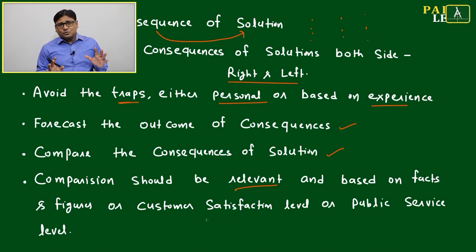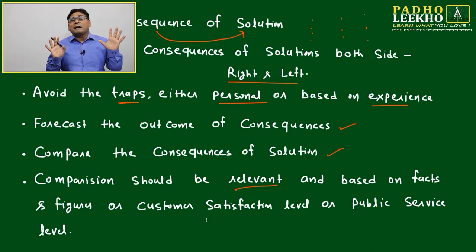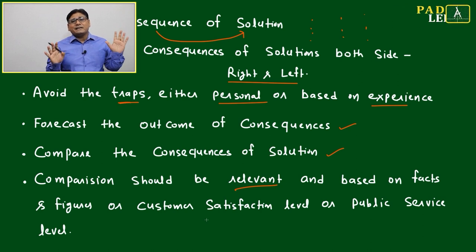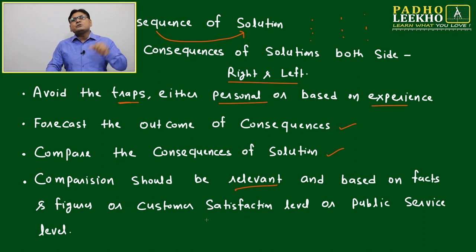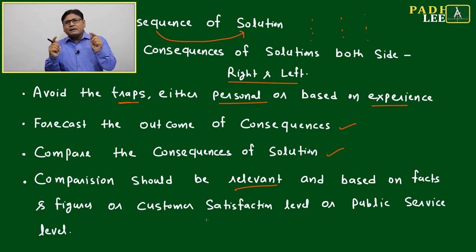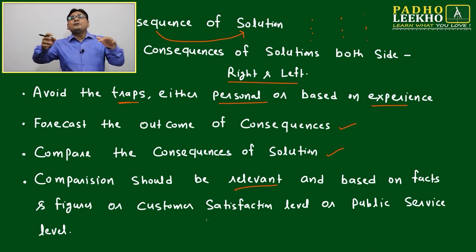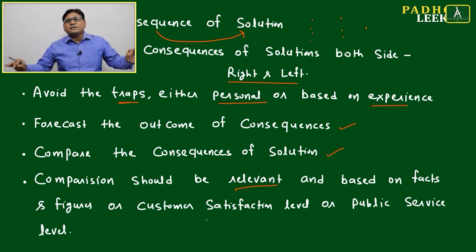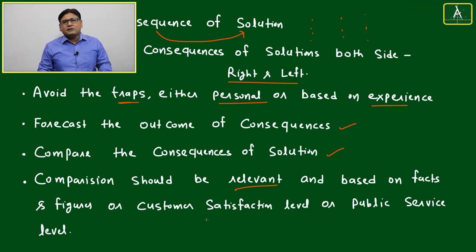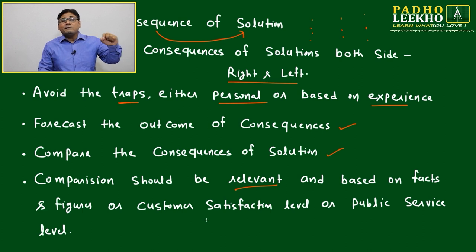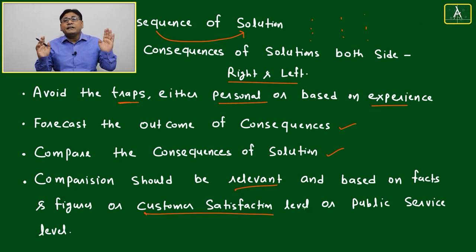Compare based on available facts and figures — data-driven decision making is always better because you will get some input or data for every possible solution. For example, this option gives 3.1%, that one 3.5% — compare accordingly. If you don't have market data, you can use customer satisfaction levels or public service levels to guide the comparison.